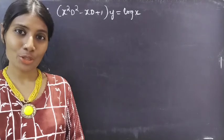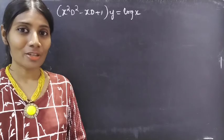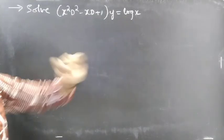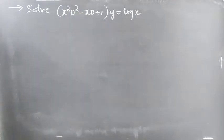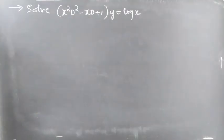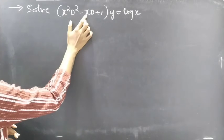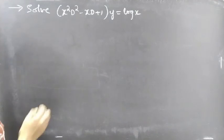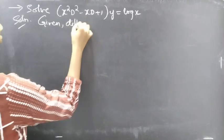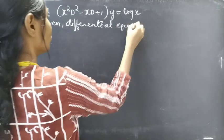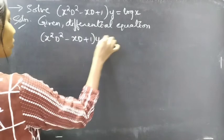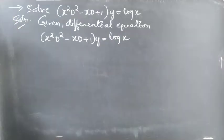Hello everyone, this is Zia Kalpana. In this video we are going to solve a differential equation from higher order linear differential equations with variable coefficients. The problem: solve x² D² − x D + 1 into y equals log x. We are given a differential equation with variable coefficients, and this is a Cauchy's equation.